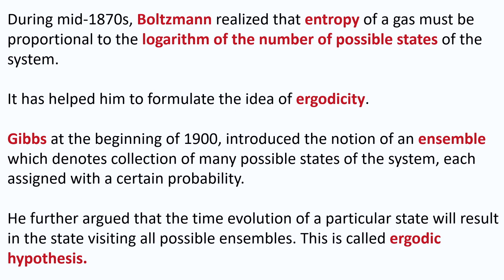For example, if there is a unique state of a system — say a ferromagnet where all spins are pointing in the same direction — this gives log(1) = 0, meaning the entropy of a perfectly ferromagnetic system is zero, as the only possible state is all spins aligned. This realization helped Boltzmann formulate the idea of ergodicity, which replaces the time average of a system by the ensemble average. Gibbs, at the beginning of 1900, introduced the notion of an ensemble, which we will use throughout this course.